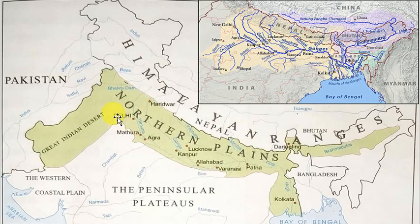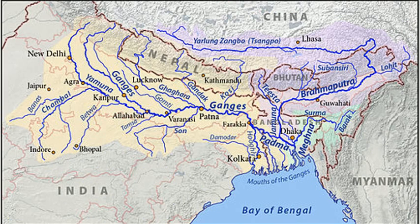The third part of the Northern Plains is the Brahmaputra Valley, also called the Assam Plain. It lies in eastern India. You can see the Brahmaputra River on the map here.